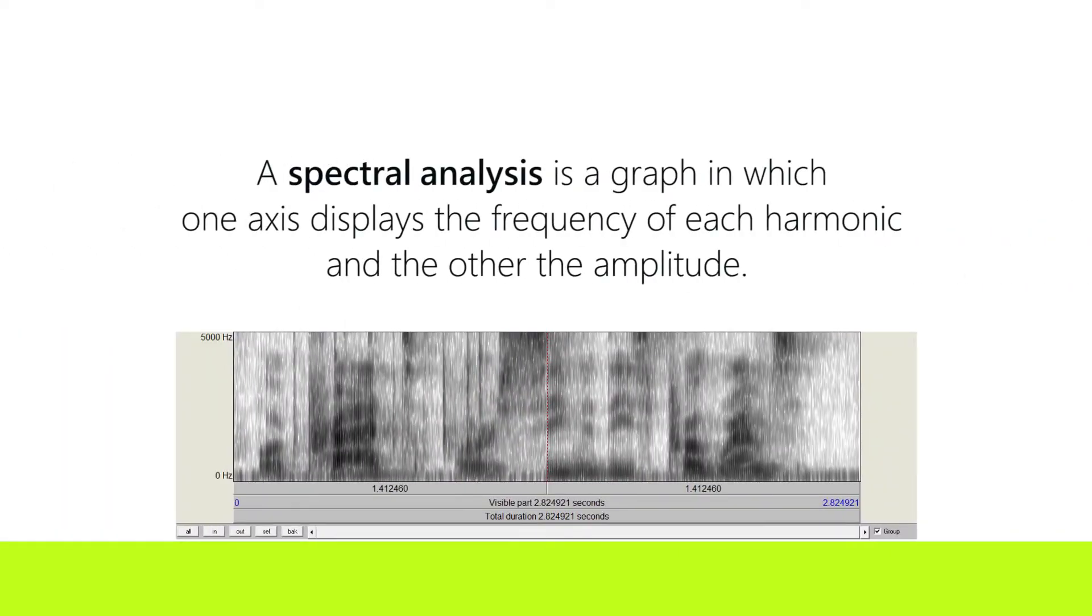A spectral analysis is a graph in which one axis displays the frequency of each harmonic and the other the amplitude. The device used to measure and display spectra, which is plural of spectrum, is called a spectrograph.